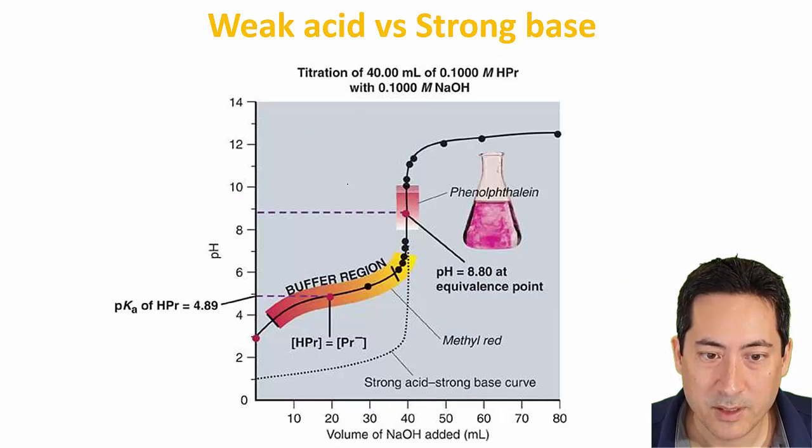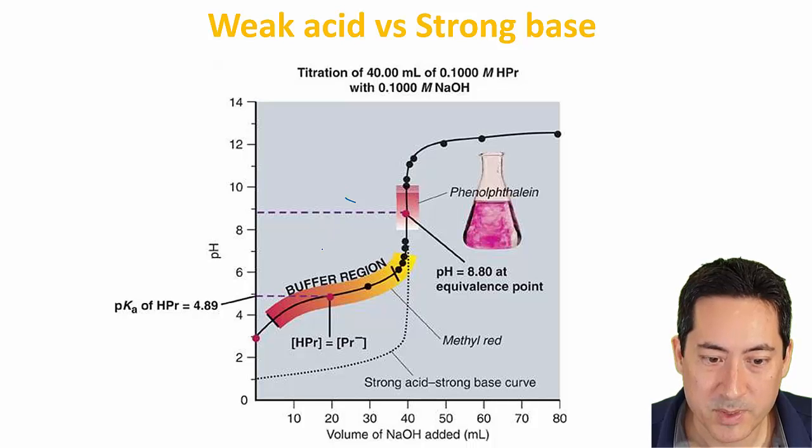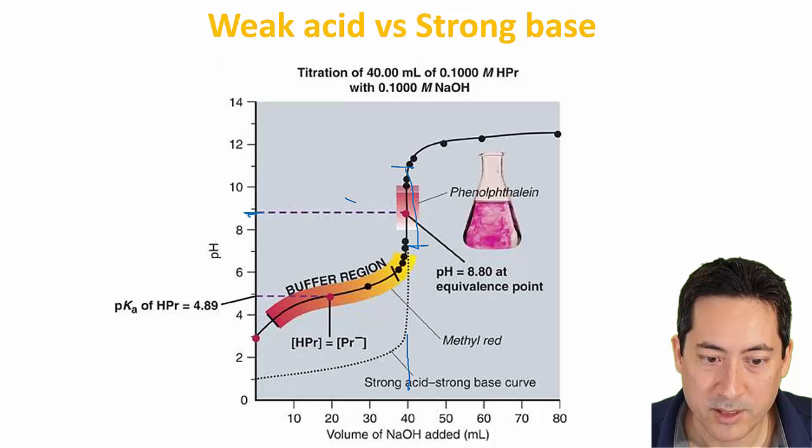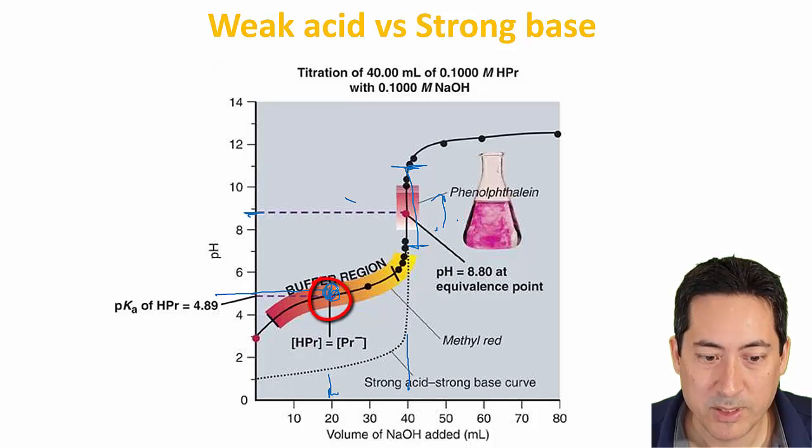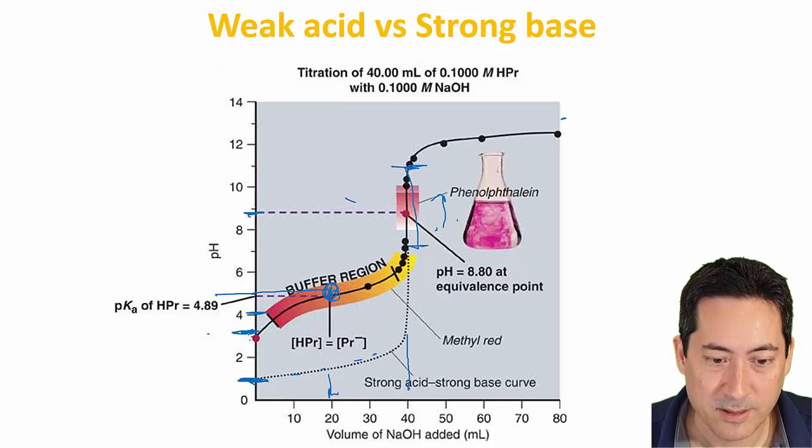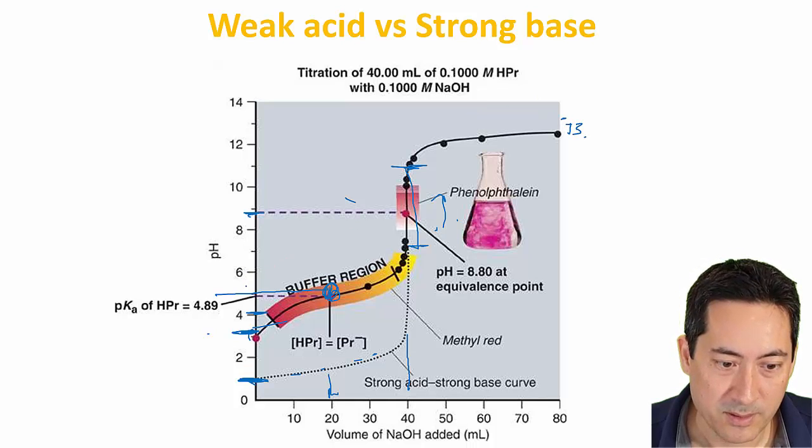Now moving on to weak acid, strong base, a similar situation. The equivalence point is here. If you look at phenolphthalein, the pKa will be somewhere around the pH range. It should be within the pH range. It goes from clear to pink. We take half of that equivalence point over here, and we can find the pKa of the acid. That's a weak acid, and that goes up to a strong base, which is like close to 13. And this one is about 3.4.